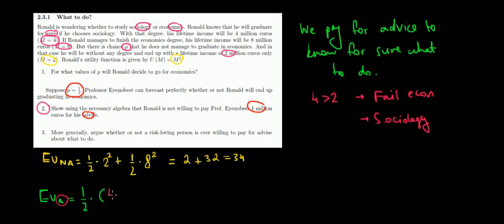So that would be an expected income of 4, but we pay for the advice and we pay 1 million for it, so we subtract from it. That would be the final payoff after paying for the advice and after knowing what to do. And the expected utility would be the income left to the power of 2.